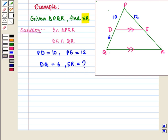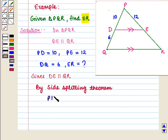Since DE is parallel to QR, so by side-splitting theorem, we have PD upon DQ is equal to PE upon ER.